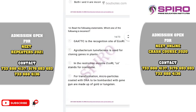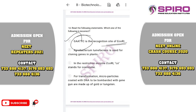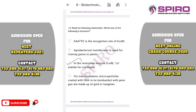Question fourteen: which statement is incorrect? ECO-R1 has a recognition site GAATTC, isolated from E. coli — correct. Agrobacterium tumefaciens is used for cloning genes in plants — also correct. However, the statement that CO in ECO-R1 stands for something other than the species is incorrect — CO stands for the species coli. So the correct option for this question is option C.